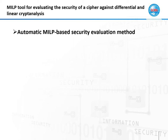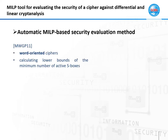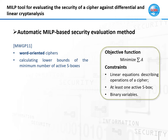Due to its easy-to-master and general-to-use features, the MILP-based method has been widely used. This kind of method was first proposed by Mouha in 2011. They introduced a model framework to calculate lower bounds of the minimum number of active S-boxes for word-oriented ciphers. The model consists of an objective function and inner constraints. The objective function is to minimize the sum of variables representing input words of S-boxes of each round.